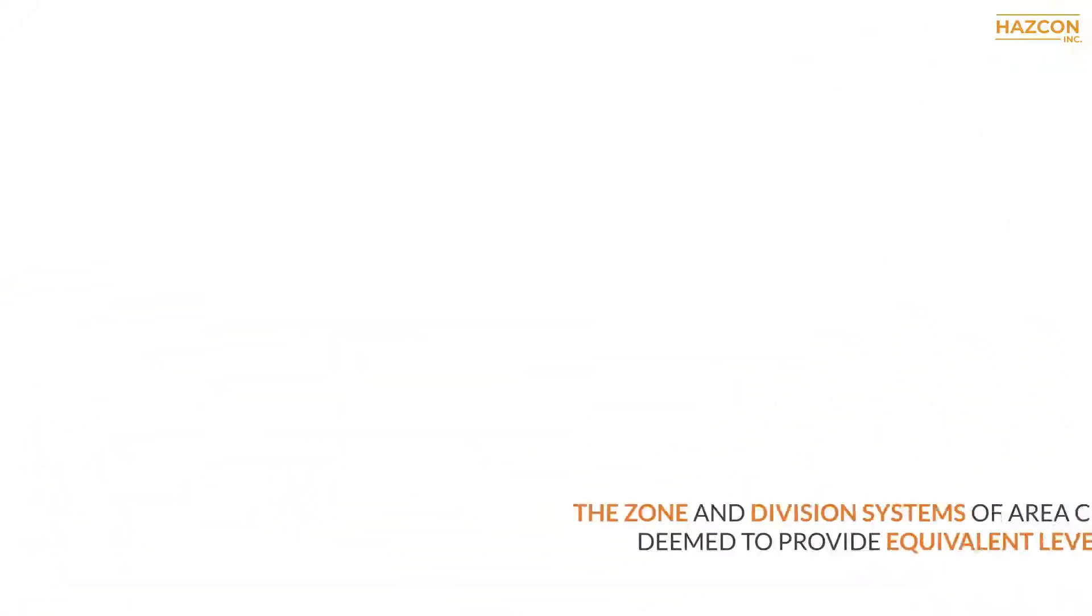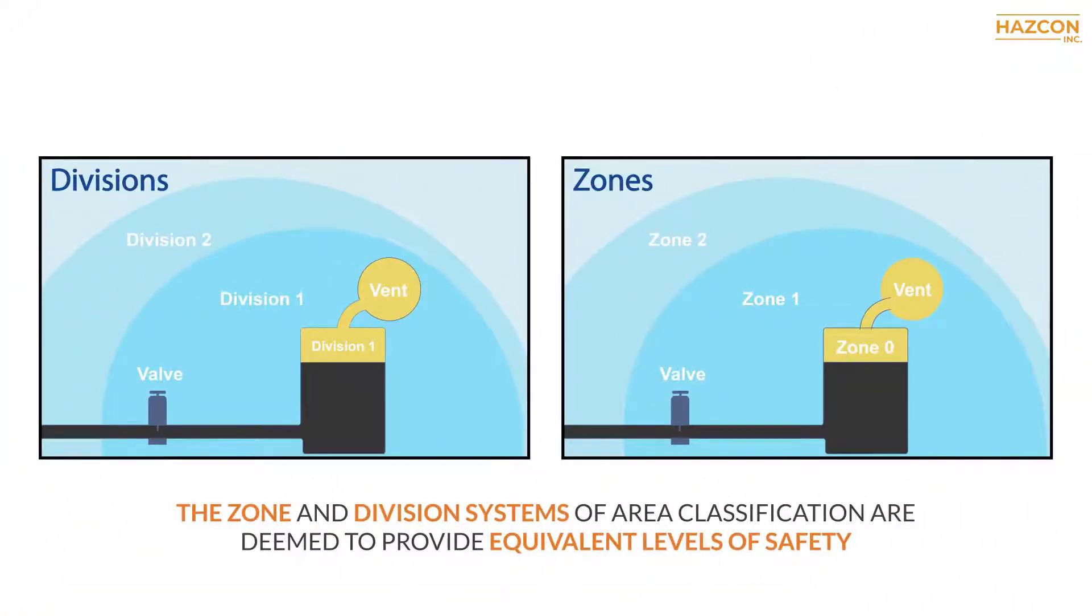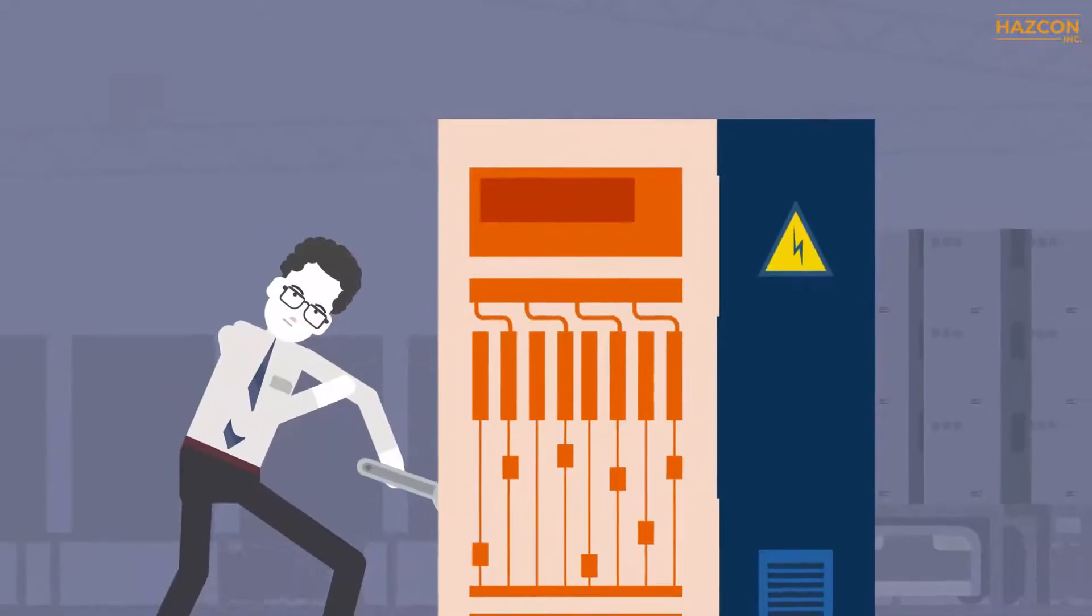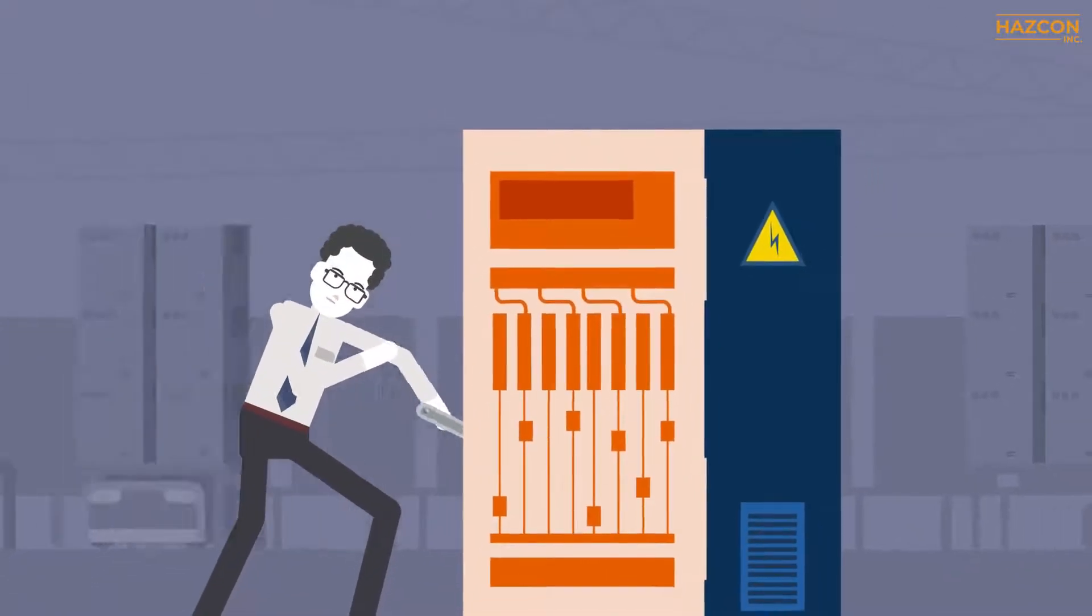The zone and division systems of area classification are deemed to provide equivalent levels of safety, but the correct installation of the products is always required.